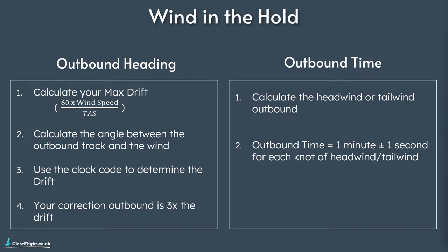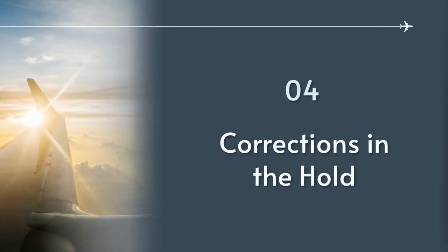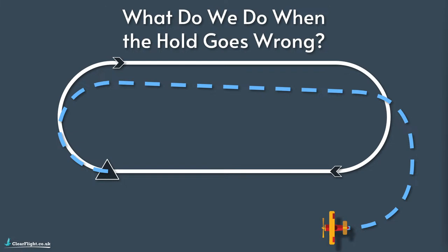So there are a few calculations to make, and the whole point is to figure out roughly what you're going to want to do when you get to the hold. You figure all this out beforehand on the ground, and you can adjust it slightly depending on what the wind is doing as you arrive. Let's say you've made all those calculations on the ground, but when you get to the hold in the air, the wind isn't quite what was forecast - you fly everything as planned but still end up a little bit out of position. What do we do about it? Once we're airborne, what do we do when the hold goes wrong?